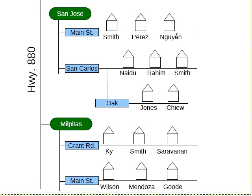Let's talk about absolute path names and relative path names and how they work with your website. An absolute path name is what you use when you're linking from your site to someone else's website.